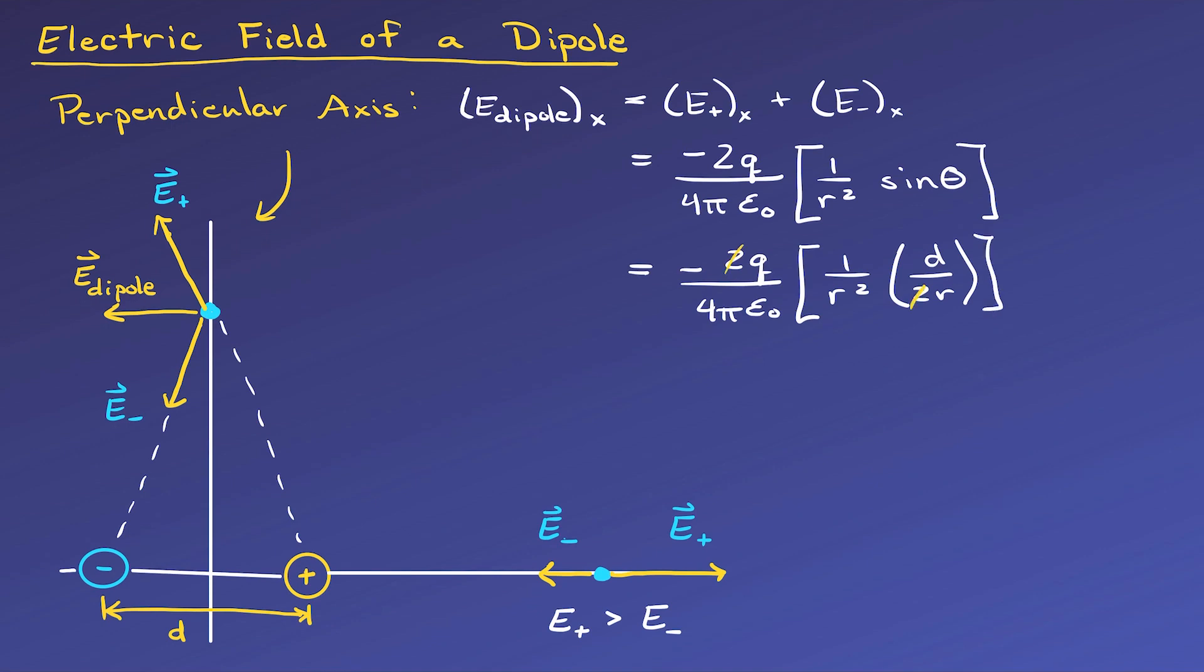Simplifying, our 2s will cancel, the 2 from half the separation distance and the 2 from accounting for both charges, they will cancel, and we'll replace q times d again with our dipole moment. Now notice that the electric field along this axis is half the magnitude of the field along the other axis that the dipole was oriented along.